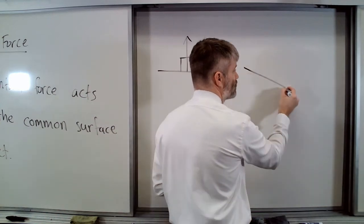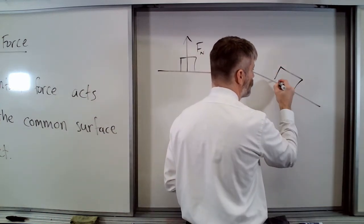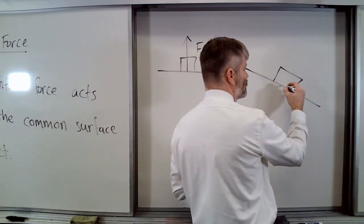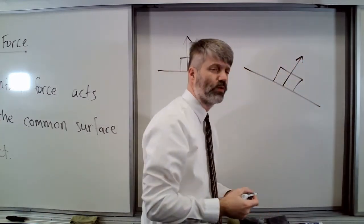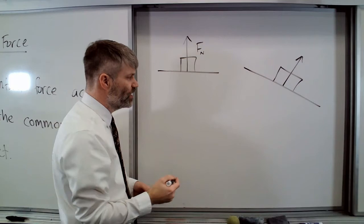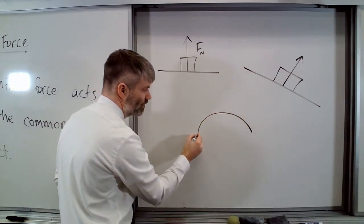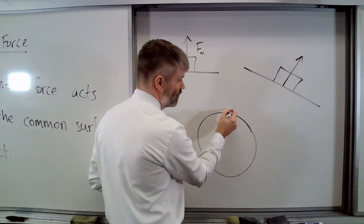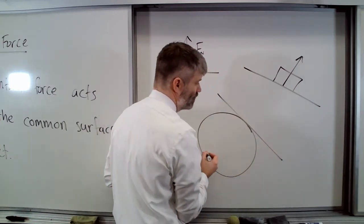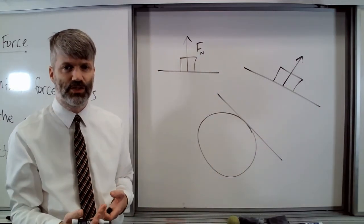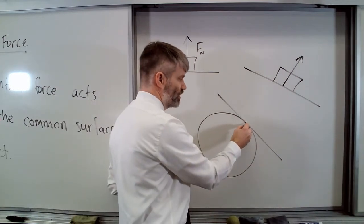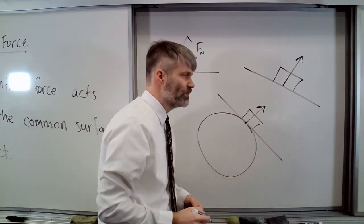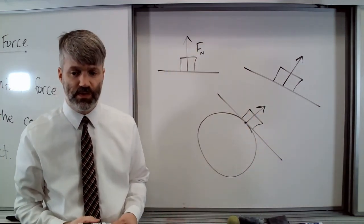If you've got it on some type of ramp, the normal force is again perpendicular to the surface of contact - your normal force is going to be like so. If you've got some type of circular or spherical object, then you will take a line that is tangent to that object at one point, and its normal force would look like so.